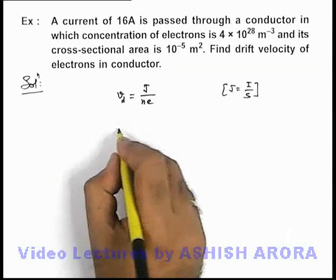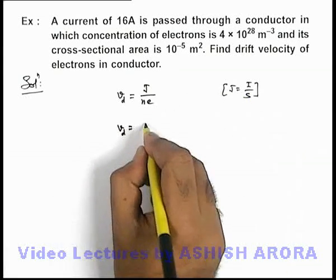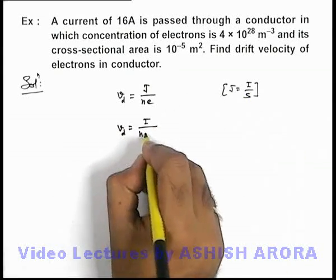So in this situation, if we substitute the value, the drift velocity will be given as i upon n e s.